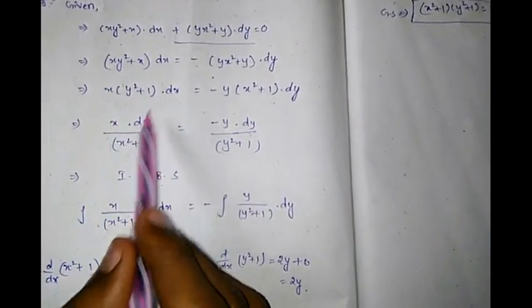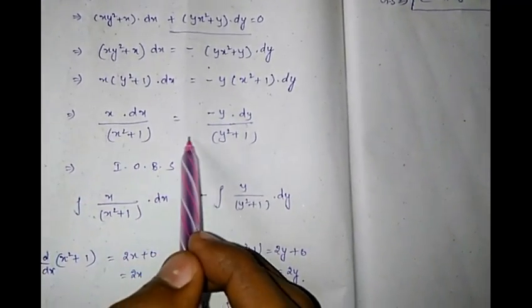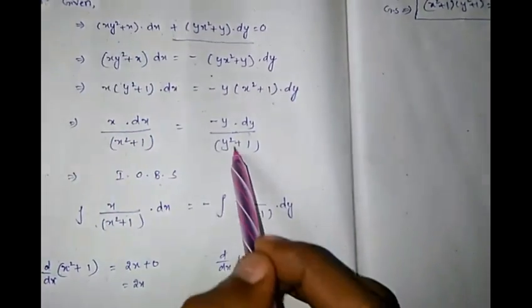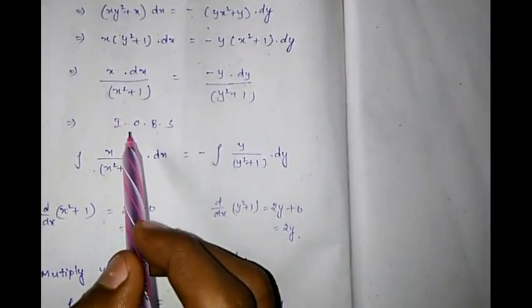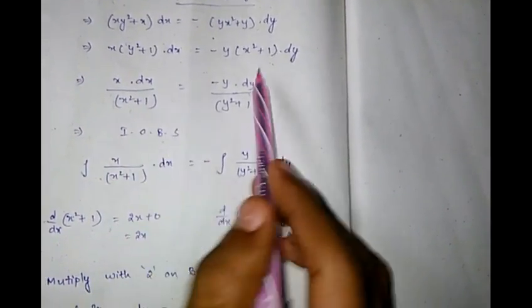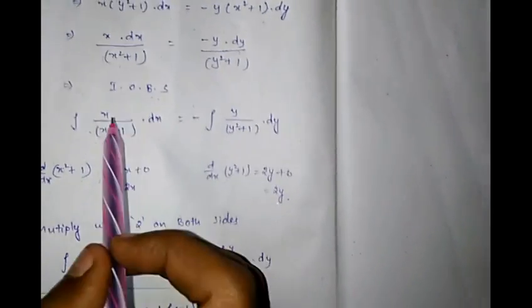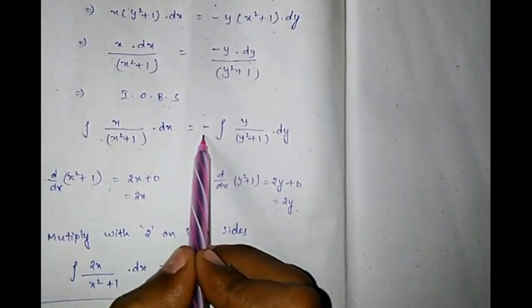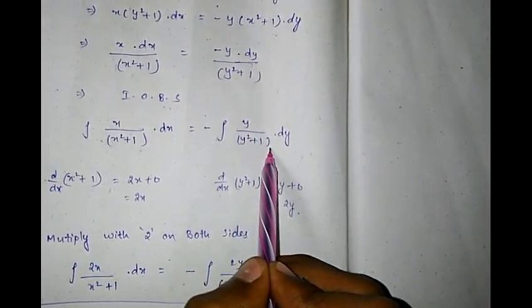After separating variables: x dx/(x²+1) = −y dy/(y²+1). Integrating on both sides: ∫x/(x²+1) dx = −∫y/(y²+1) dy.